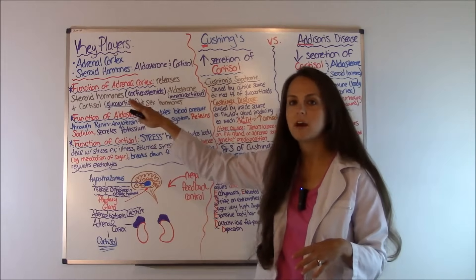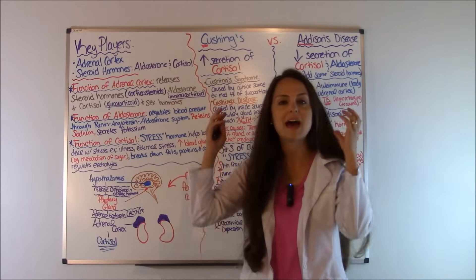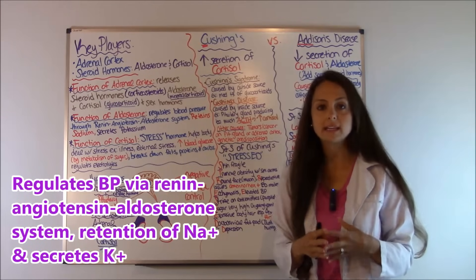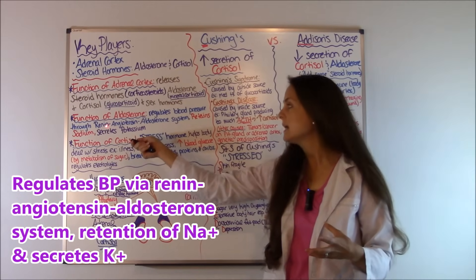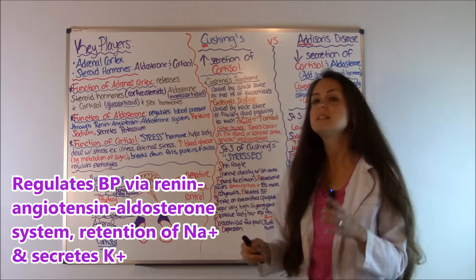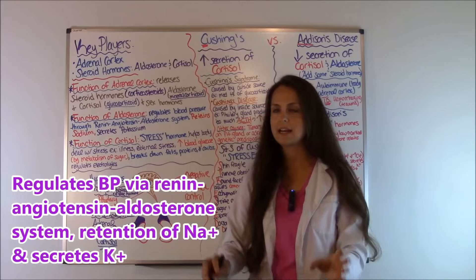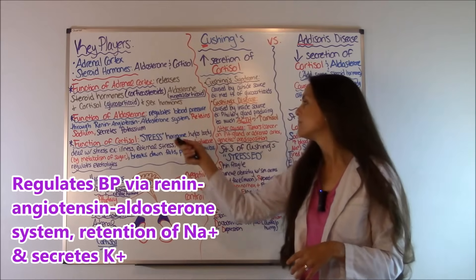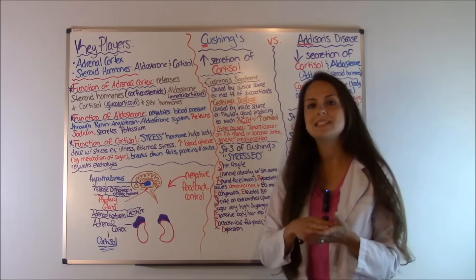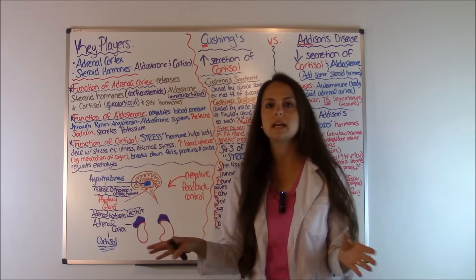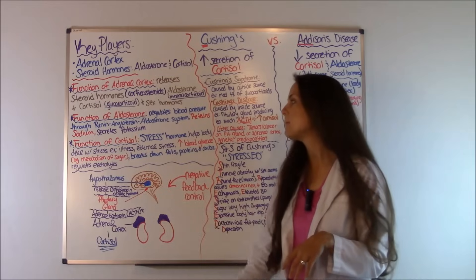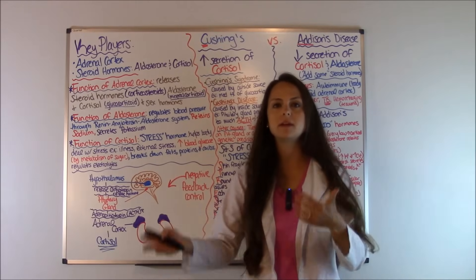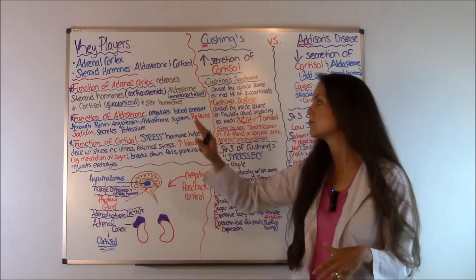Let's look at the function of aldosterone and cortisol, as those are what we are most interested in with these two endocrine problems. Aldosterone regulates our blood pressure through the renin-angiotensin-aldosterone system, keeping our blood pressure regulated. If anything happens to aldosterone levels, it throws off that whole system — you'll have either high or low blood pressure. Aldosterone also plays a role in retaining sodium and secreting potassium, so it regulates our potassium and sodium levels.